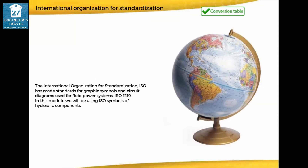The International Organization for Standardization, ISO, has made standards for graphic symbols and circuit diagrams used for fluid power systems, ISO 1219. In this module, we will be using ISO symbols of hydraulic components.